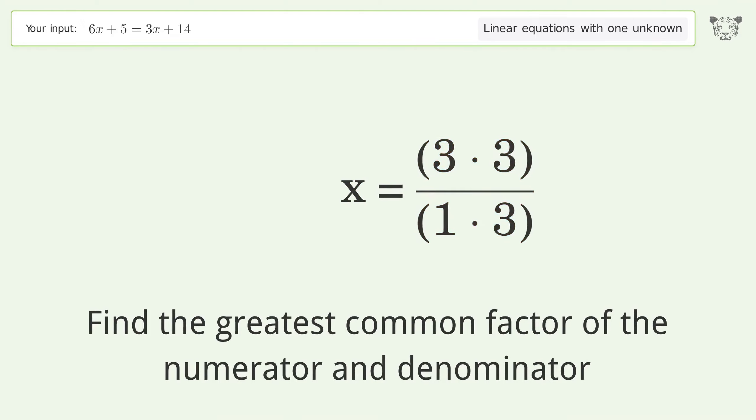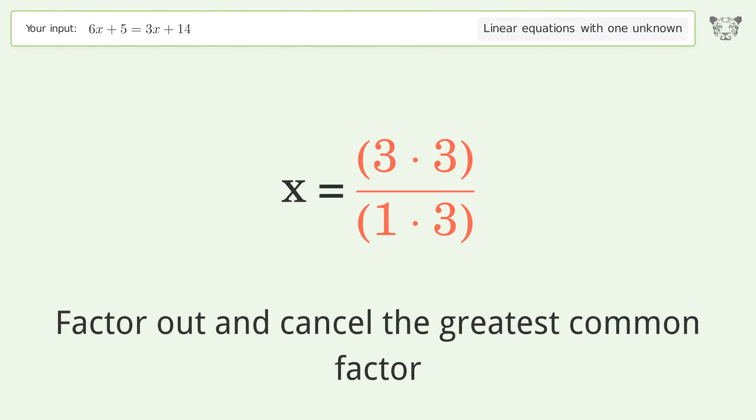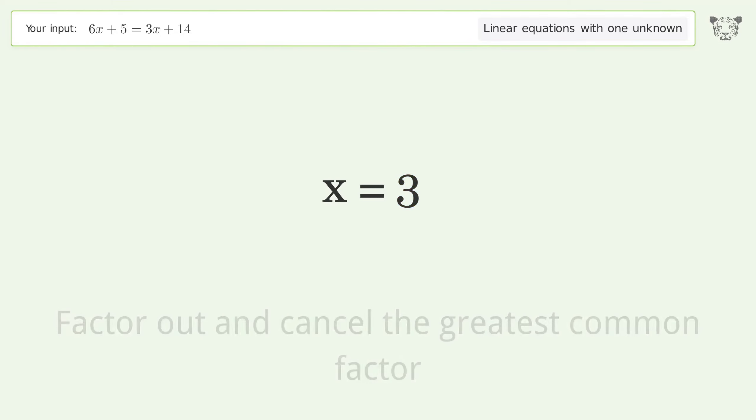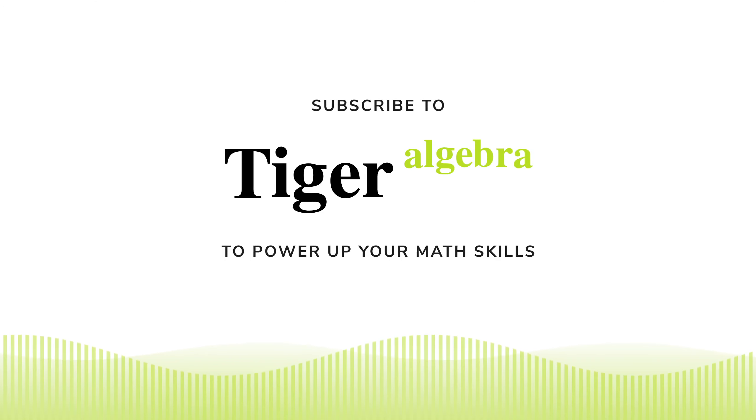Find the greatest common factor of the numerator and denominator. Factor out and cancel the greatest common factor. And so the final result is x equals 3.